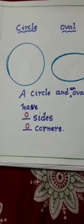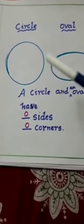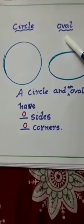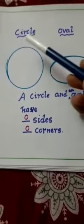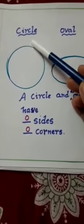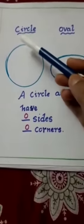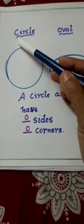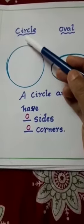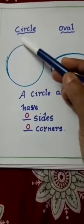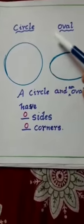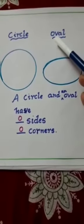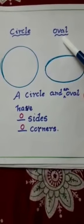Now we are going to learn about circle and oval. Let us learn the spellings. Circle: C-I-R-C-L-E. Oval: O-V-A-L.